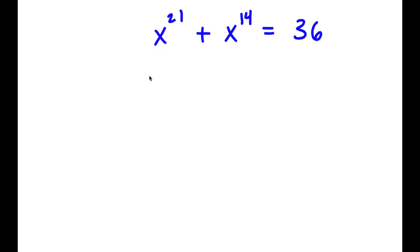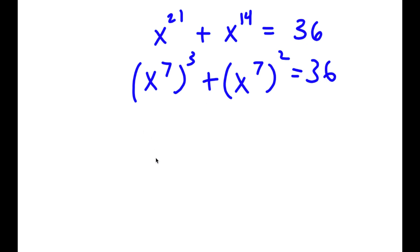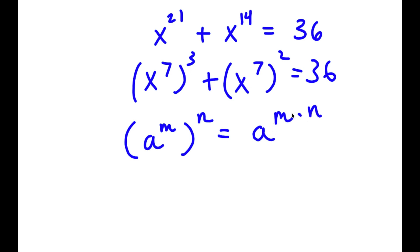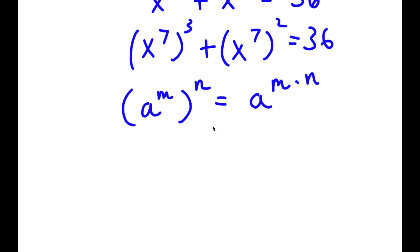Now x to the power of 21 is equal to x to the power of 7, to the power of 3. Plus x to the power of 14, this is equal to x to the power of 7, to the power of 2. Because if I have something in the form a to the power of m to the power of n, this is equal to a to the power of m times n. So in this case, m times n was 21 and 14. I simply changed 21 to 7 times 3 and rewrote in that form. So now I'm going to say that the variable a is equal to x to the power of 7.